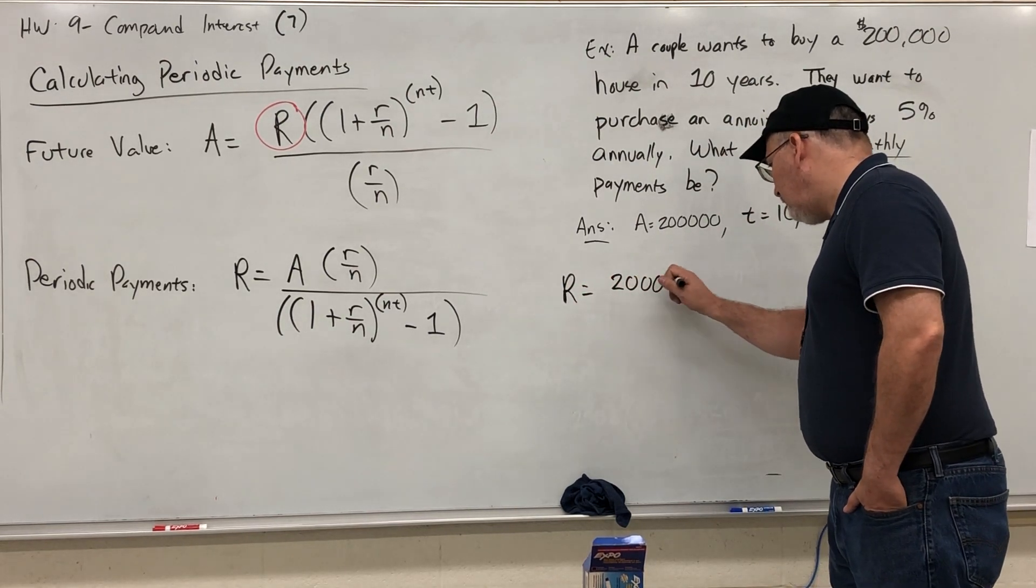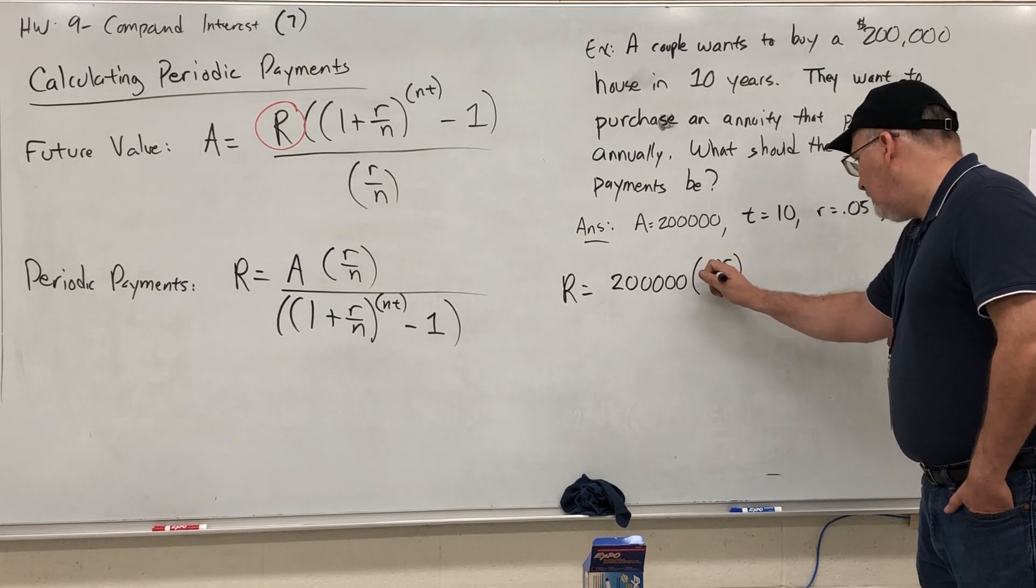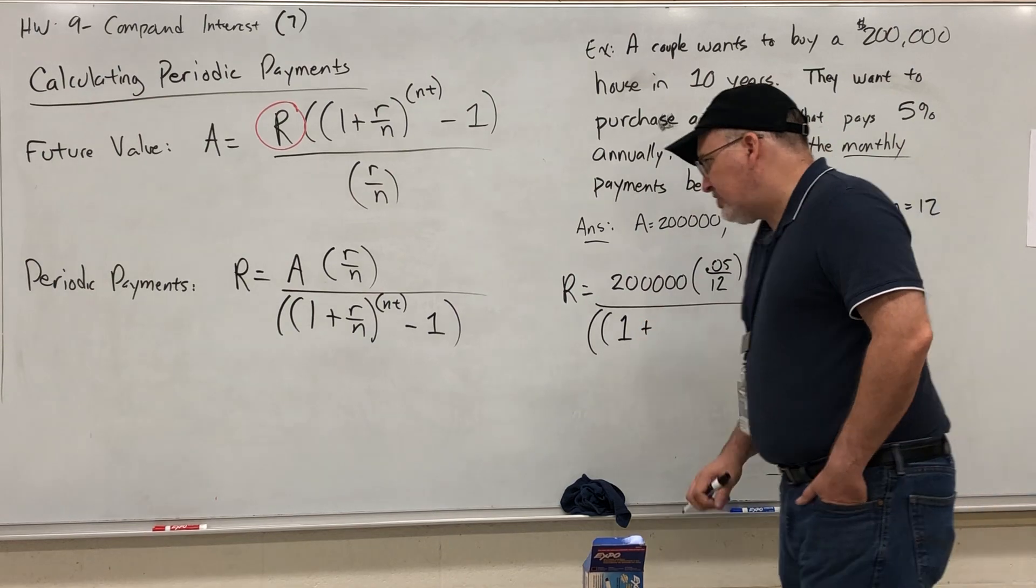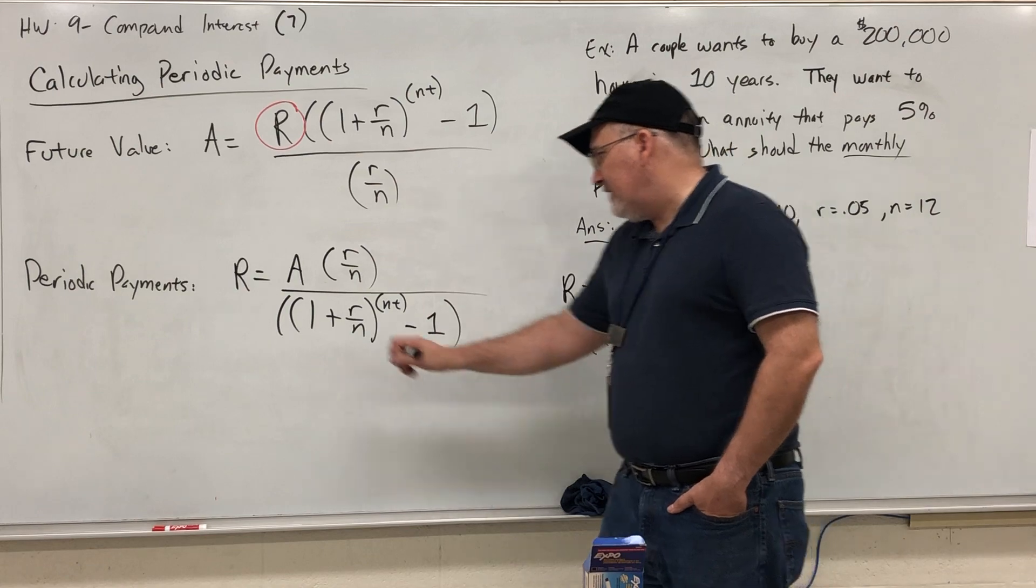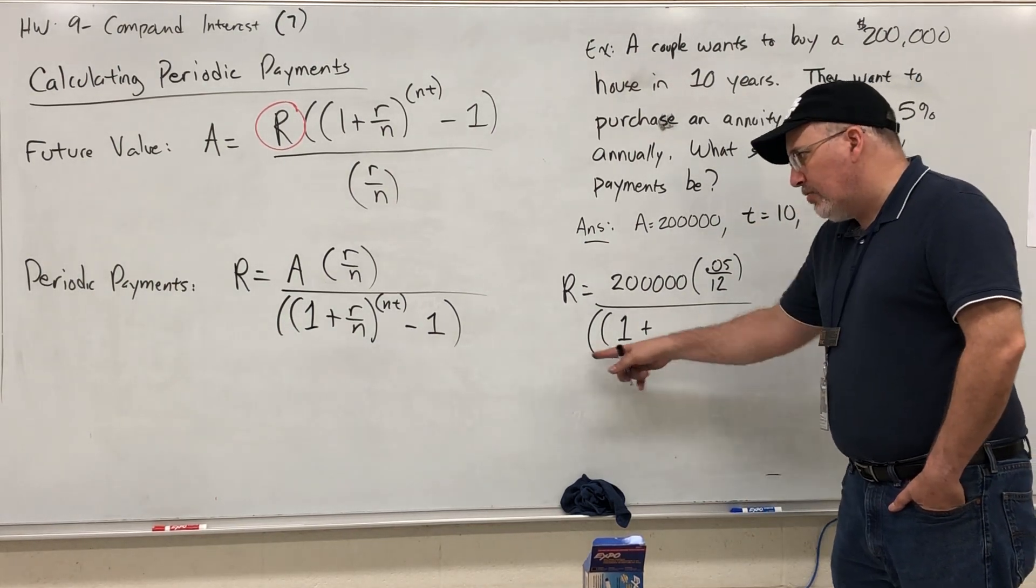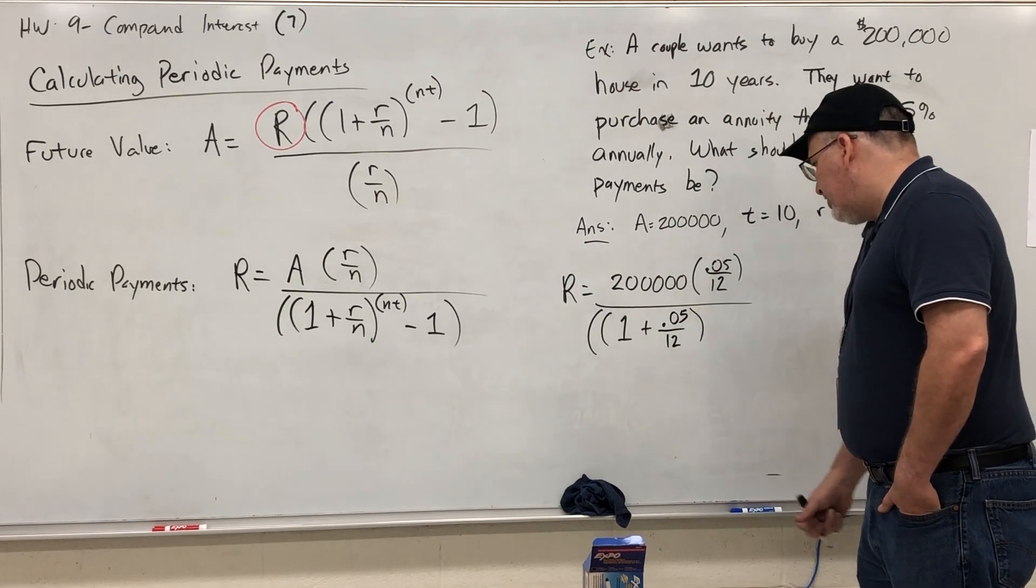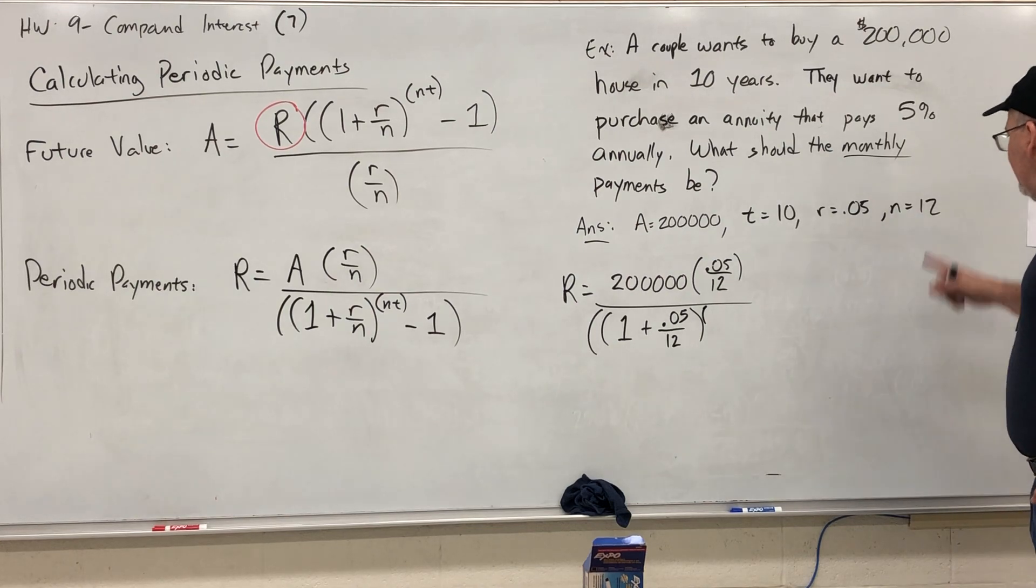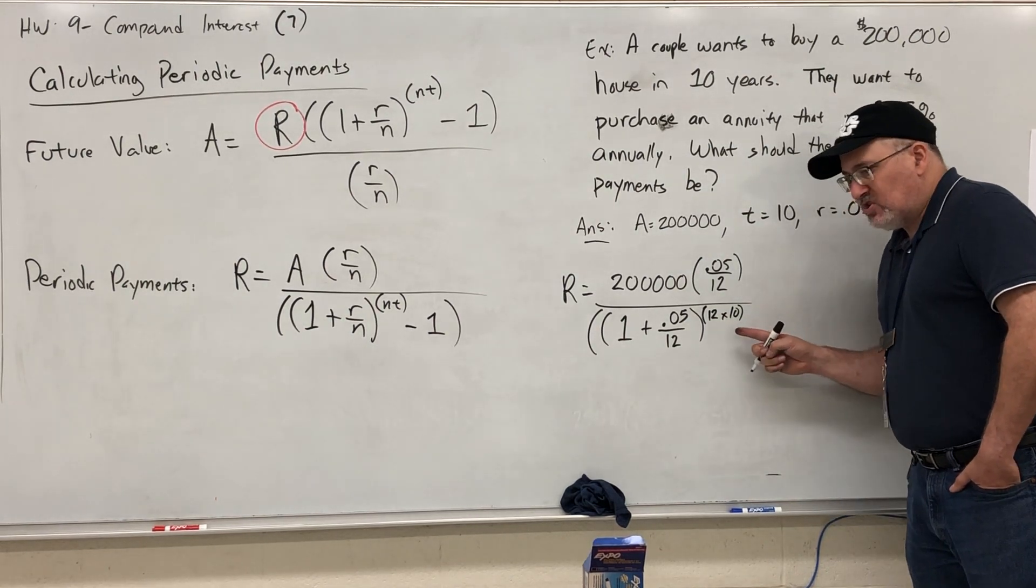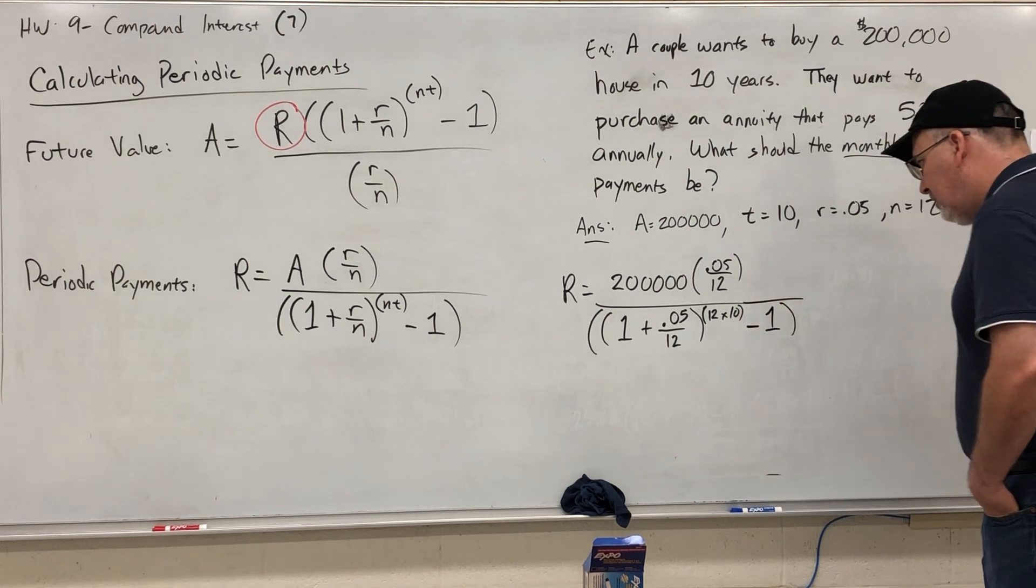So let's just plug everything into the periodic payment formula. A, which is 200,000, times R over N, so 0.05 over 12. Don't lose the decimal. All over, double open parenthesis, one plus 0.05 over 12, close parenthesis, exponent, open parenthesis, N times T, so 12 times 10. I know that's equal to 120, but I won't always know the answer to this multiplication problem, so I'll just leave it and save it for the calculator. And then continuing out of the exponent, minus one, close parenthesis again. And there's the setup.